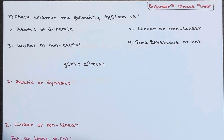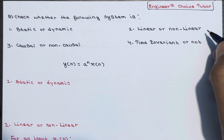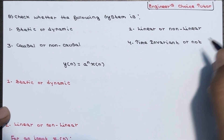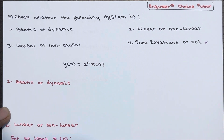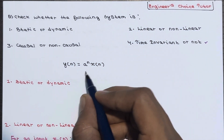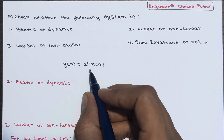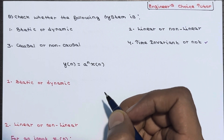Hi everyone. In this lecture we will see one more numerical in which we have to find out whether the system is static or dynamic, linear or not, causal or non-causal, time invariant or not. The system equation is given as y(n) = a^n · x(n).